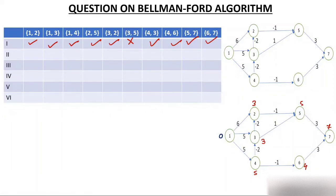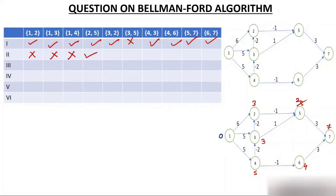Second pass: edge 1-2 — 0 plus 6 is 6, not less than 3, no relax. Edge 1-3 — 0 plus 5 is 5, not less than 3, no relax. Edge 1-4 — 0 plus 5 is 5, already 5, no relax. Edge 2-5 — node 2 is now 3, edge weight -1, so 3 plus -1 is 2. Is 2 less than 5? Yes — node 5 becomes 2.